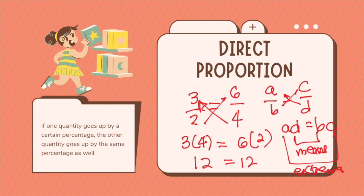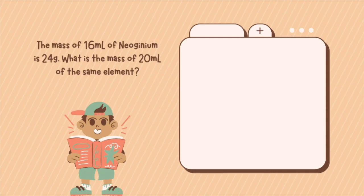If one quantity goes up by a certain percentage, the other quantity goes up by the same percentage as well. That is what we call direct proportion. For example, the mass of 16 ml of neogenium is 24 grams. What is the mass of 20 ml of the same element?